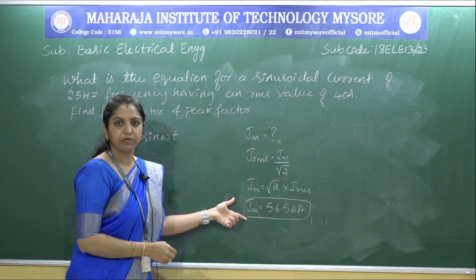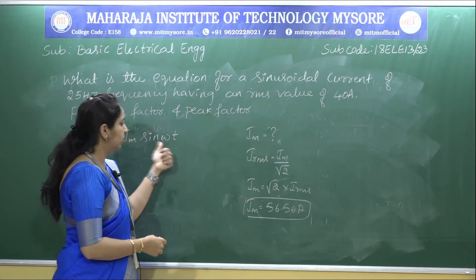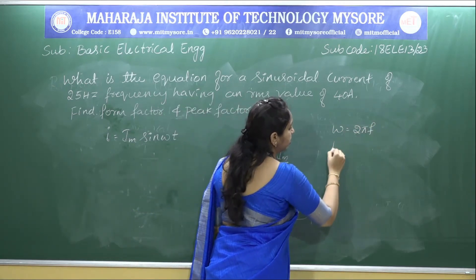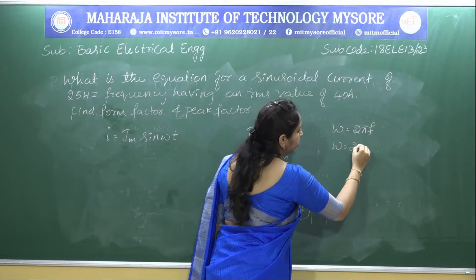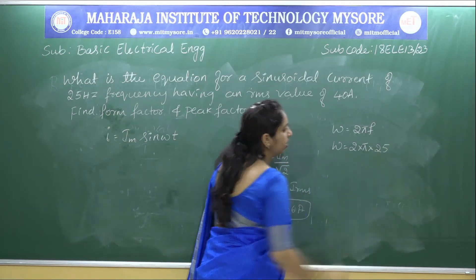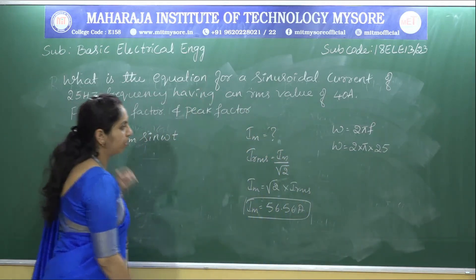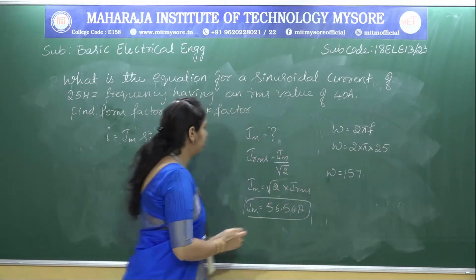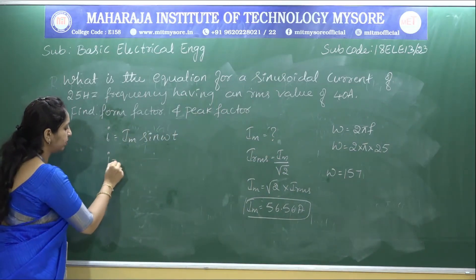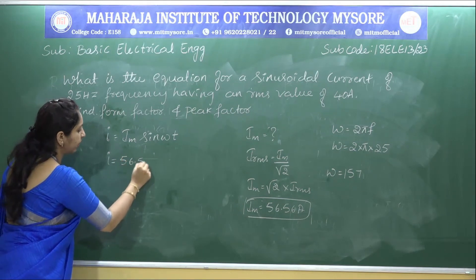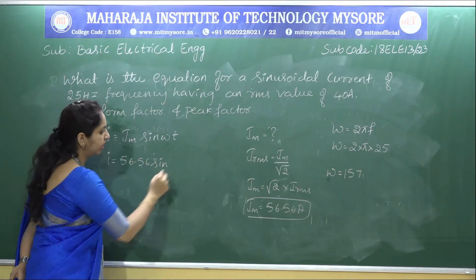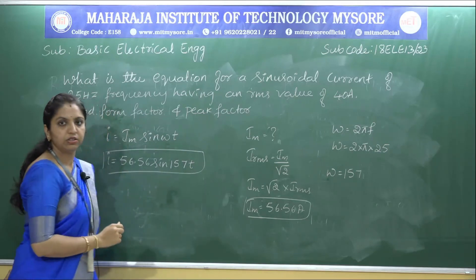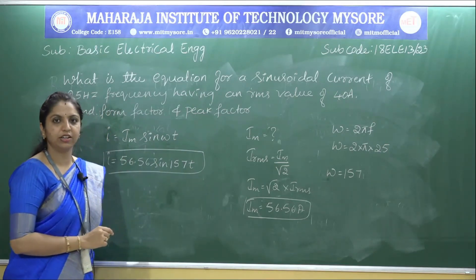Once we have the maximum current, we calculate ω. Since ω = 2πf, and frequency f = 25 Hz, we get ω = 2 × π × 25 = 157 rad/s. Substituting all values, the instantaneous current equation is i = 56.56 sin(157t). This is how we write the instantaneous current equation.